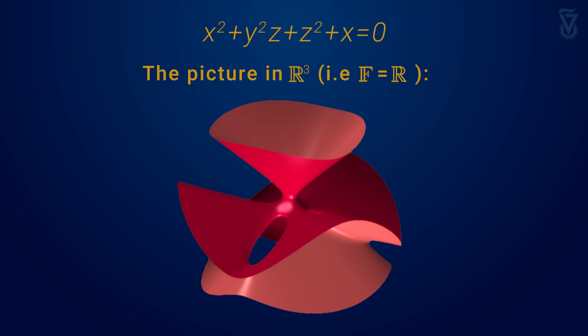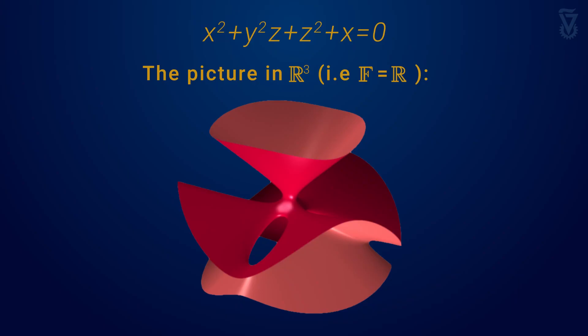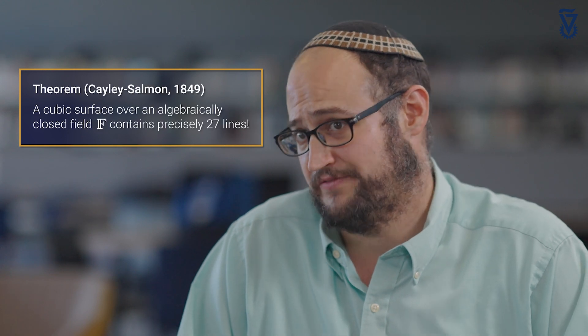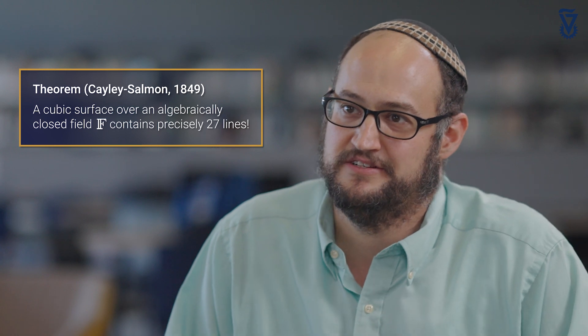Gilad, how many lines do you see in the surface? I don't see too many lines, it looks all wobbly. Look at the equation — do you see any lines you could find by setting variables equal to zero? If you take x and z to be zero, then y can be everything, and you get a line. Perfect, so we found one line. What would you think if I told you there are 27 lines there? There's a theorem going back to 1849 — the theorem of Cayley and Salmon — showing that if F is an algebraically closed field, then any cubic surface has precisely 27 lines, regardless of the surface, as long as the field is algebraically closed.